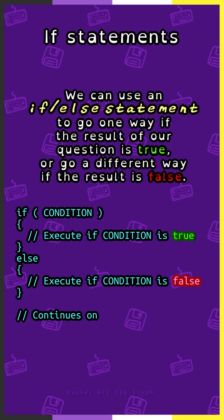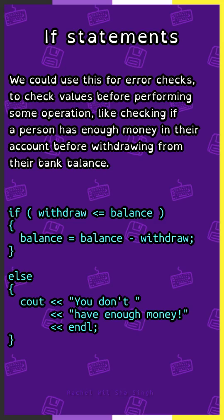We write 'if' and then open-close parentheses with the condition inside, and the else statement has no condition part. We could use this for error checks, to check values before performing some operation, like checking if a person has enough money in their account before withdrawing from their bank balance.